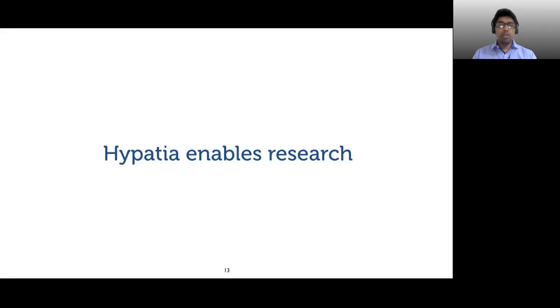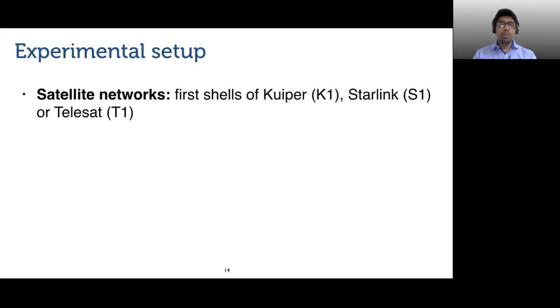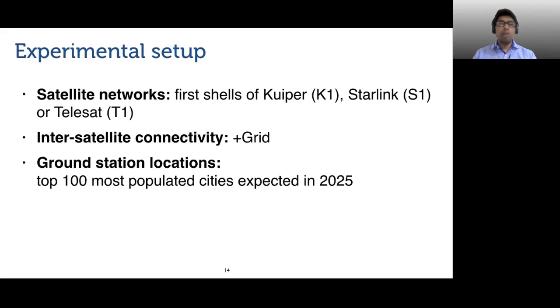Before diving into the results, let us touch upon the experimental setup. We simulate either the first shell of Kuiper, Starlink, or Telesat. The inter-satellite connectivity is a plus grid, which is a north-south-east-west connectivity pattern. To the best of our knowledge, all publicly available scientific papers, patents, and visualizations assume the same plus grid connectivity. For ground station locations, we select the top 100 most populated cities by 2025.